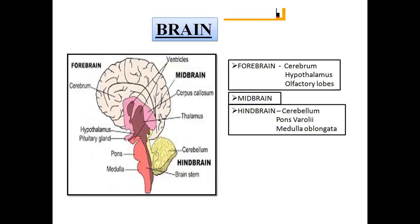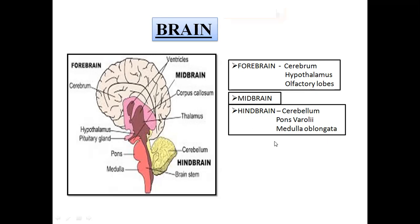Now let us discuss the brain in detail. Here is a diagram which represents the structure of the brain. The brain is mainly divided into three parts: the forebrain, the midbrain in the middle, and the hindbrain at the back. The forebrain is comprised of three parts: cerebrum, hypothalamus, and olfactory lobes. The midbrain is not so much developed in humans but still it is there. The hindbrain is comprised of cerebellum, pons varoli, and the medulla oblongata. Pons and the medulla oblongata together form the brain stem.